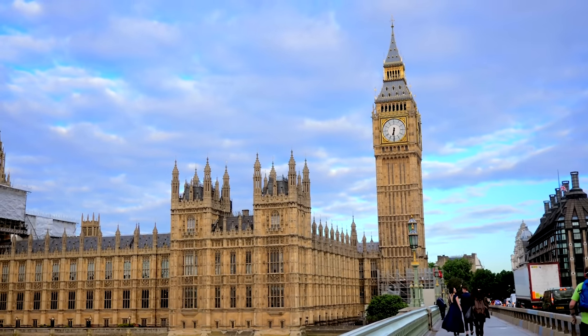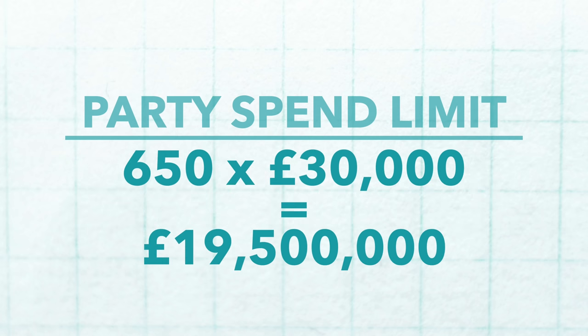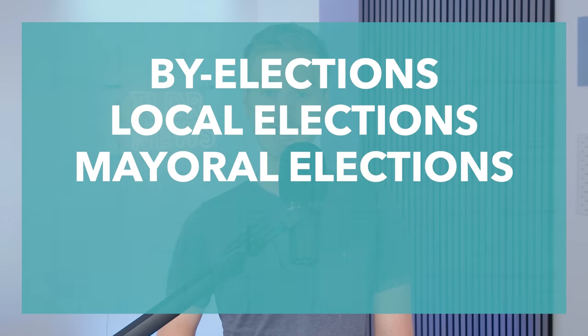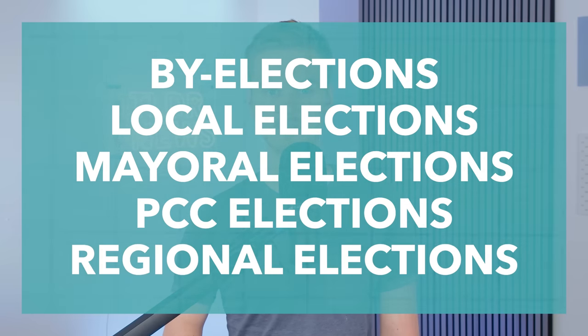In 2019, on average, the limit was about £30,000 per constituency. If a party fielded a candidate in all 650 constituencies, this limit would be about £19.5 million. Now, this is just for general elections. Major parties like the Conservatives, Labour and the Lib Dems all contest other types of elections too, such as by-elections, local elections, mayoral elections, police and crime commissioner elections, and regional elections such as the Scottish Parliament. Each of these elections also have their own limits.